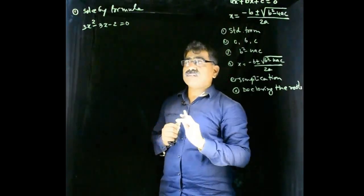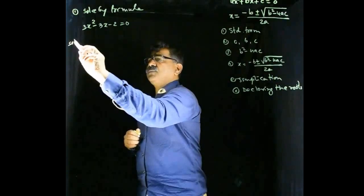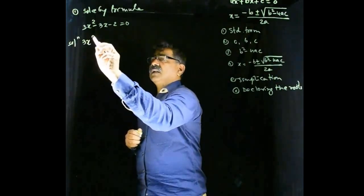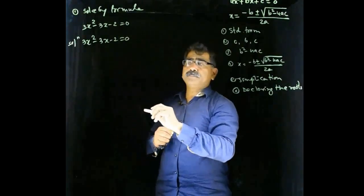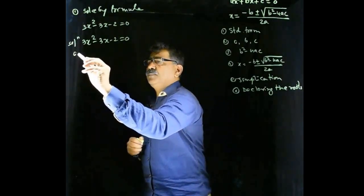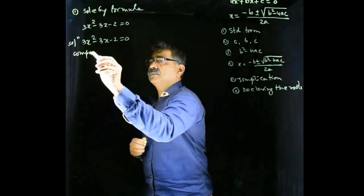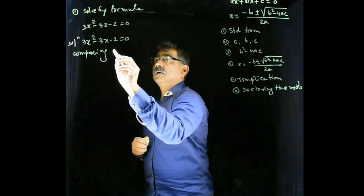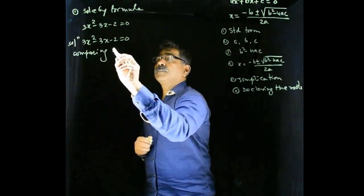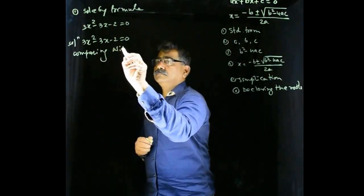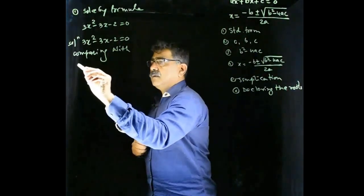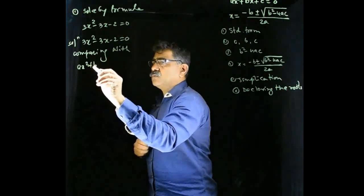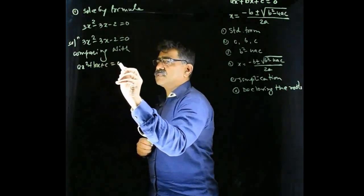So that work is reduced. First of all, writing this in standard form is already done. Now, I will compare this with, comparing with what? Yes, comparing with this standard form. Comparing with ax square plus bx plus c equal to 0.